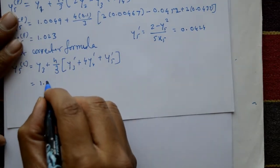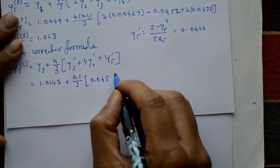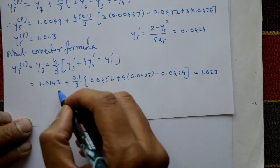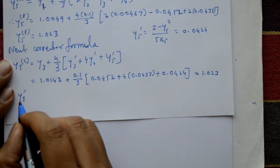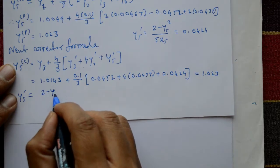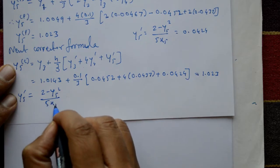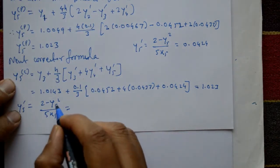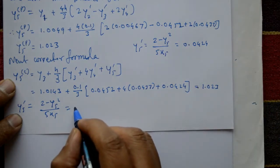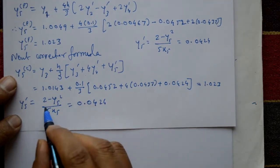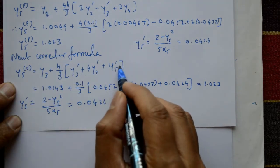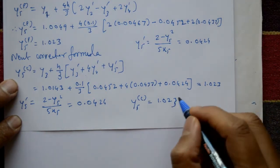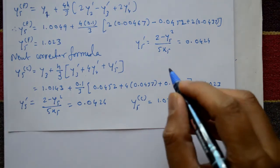Substituting into the corrector formula: y5_c = 1.0143 + (0.1/3)(0.0552 + 4 × 0.0437 + 0.0424) = 1.023. Applying the corrector formula a second time: using y5 = 1.023 and x5 = 4.5, y5' = 0.0424 — no change. The corrector formula again gives 1.023, so the final answer is y5 = 1.023.